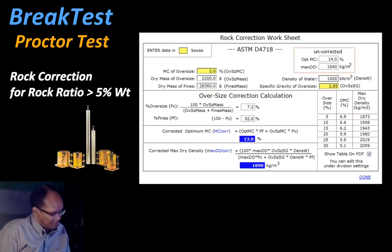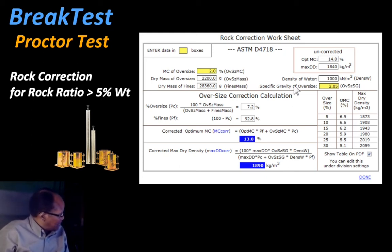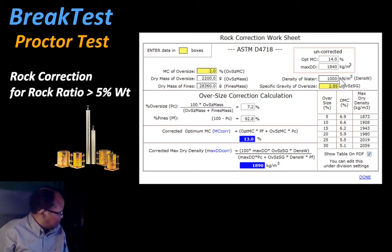The oversize moisture content is predefined as 2% and the specific gravity of the oversize is predefined as 2.85. The density of water is straightforward at 1000 kg/m³. This tool performs the calculation immediately to give you the corrected optimum moisture content and maximum density.